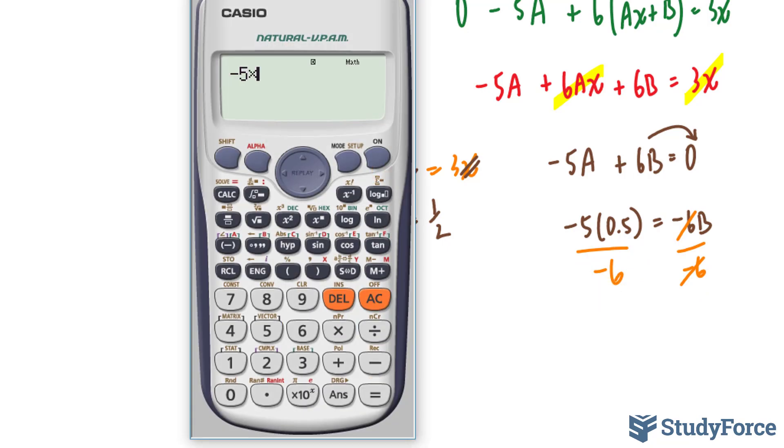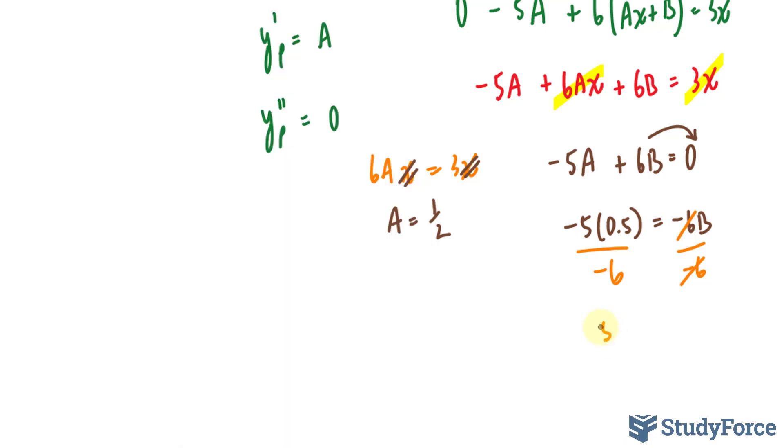negative 5 times 0.5 divided by negative 6, and we get 5 over 12. This is our value for b, and this is our value for a.